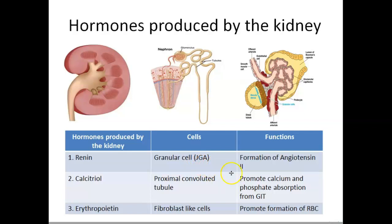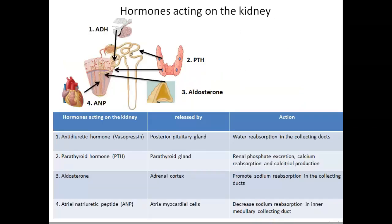The third hormone produced by the kidney is erythropoietin. Erythropoietin is produced from the fibroblast-like cells, which exist within the interstitium of the kidney. The major function of erythropoietin is to promote the formation of red blood cells.